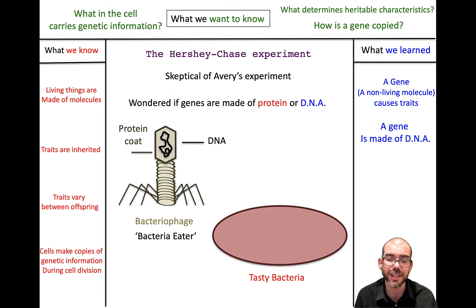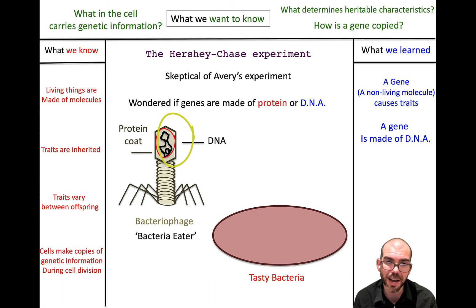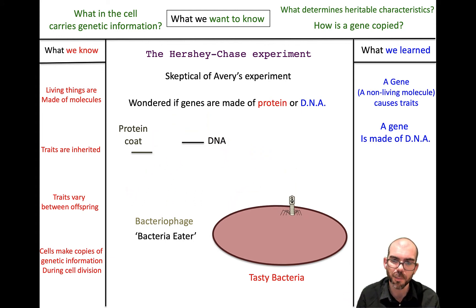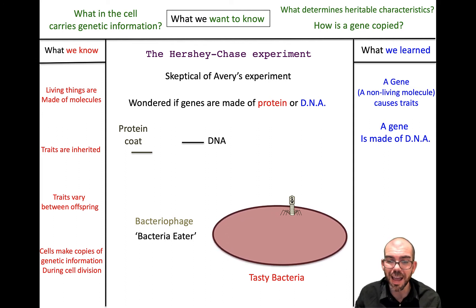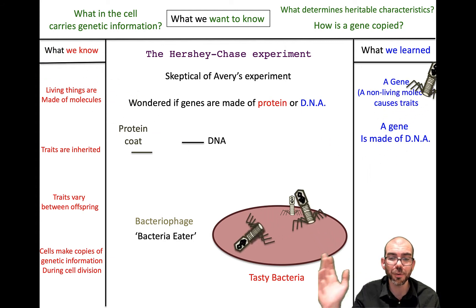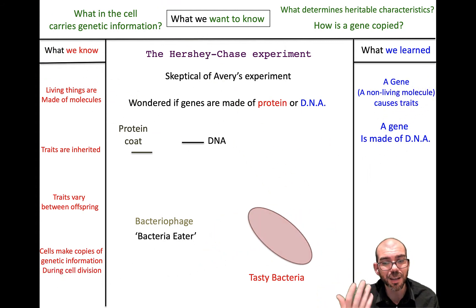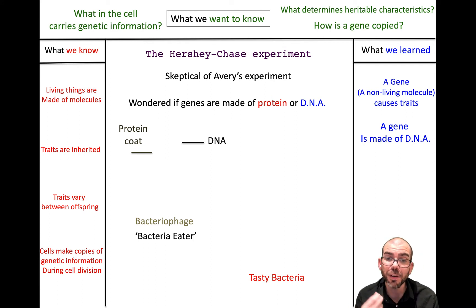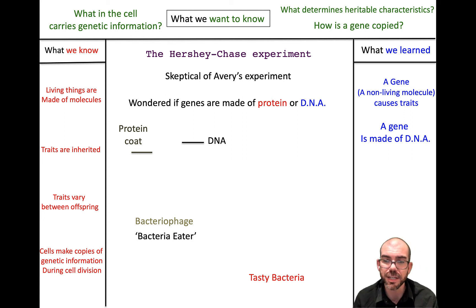Hershey and Chase decided to use bacteriophages — a virus that has only two parts: DNA in the middle and a protein coat on the outside, perfect for this analysis. We knew that when bacteriophages approached bacteria, they appeared to inject something in, and afterwards multiple viruses — their offspring — would emerge and the bacteria would be destroyed. So the key question was: is the virus injecting DNA or protein into the bacteria?